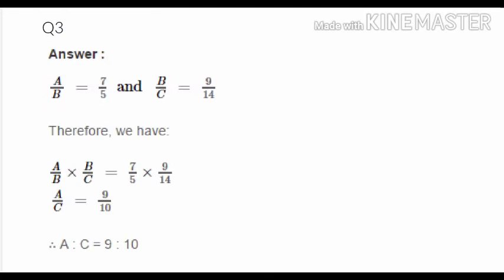Question 3 gives a:b = 7:5 and b:c = 9:14 and asks for a:c. Multiply the two ratios: (a/b) × (b/c) = (7/5) × (9/14). The b's cancel, leaving a/c. Simplify: 7 and 14 cancel, leaving 9 in the numerator and 5 × 2 = 10 in the denominator. So a:c = 9:10.